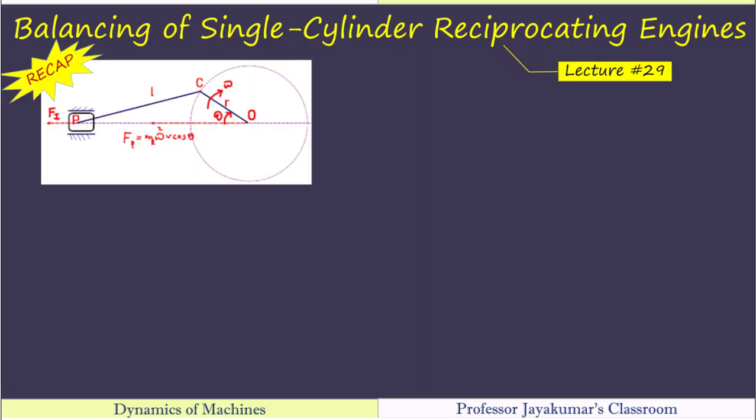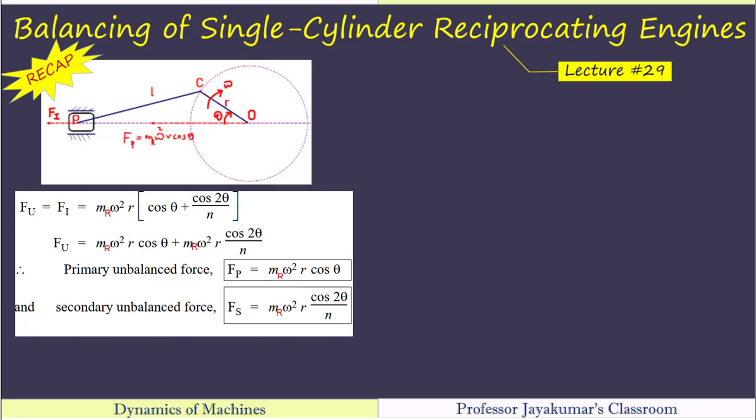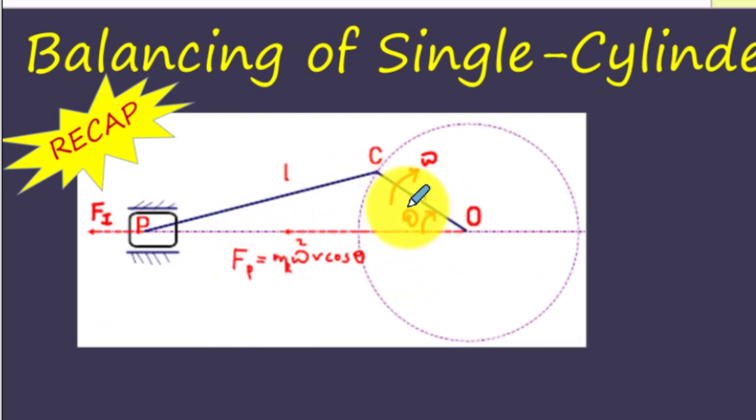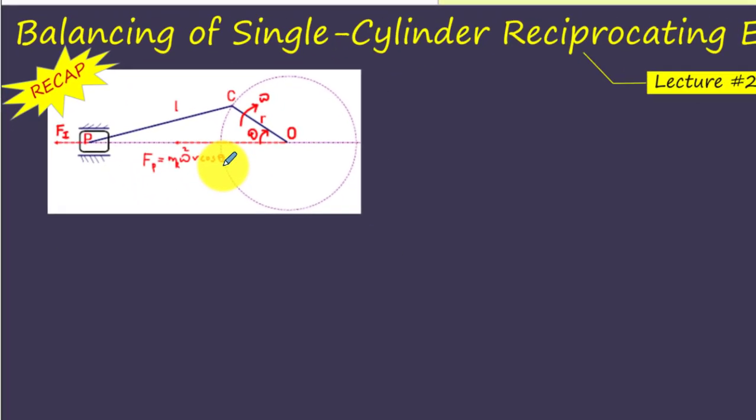We know that the inertia force of the reciprocating parts cause the unbalance in a reciprocating engine. Then we have learnt that the unbalanced forces have two components, namely primary unbalanced force and secondary unbalanced force. Since the magnitude of secondary unbalanced force is smaller than that of the primary unbalanced force, it can be neglected. And we consider only primary unbalanced forces for our balancing purpose. So this gives the direction of primary unbalanced force. m_r omega square r cos theta gives the magnitude of the unbalanced forces.